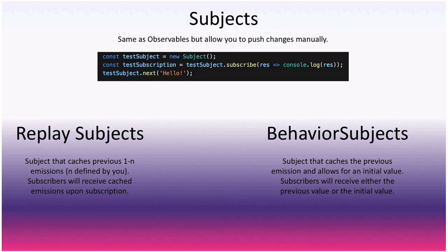Subjects are the same as observables but allow you to push changes manually and from outside the observable itself. You create a subject, subscribe to get a subscription, and can call next anywhere you have a reference. Replay subjects are subjects that cache the previous N emissions — defined by you — so subscribers receive all cached emissions upon subscription.